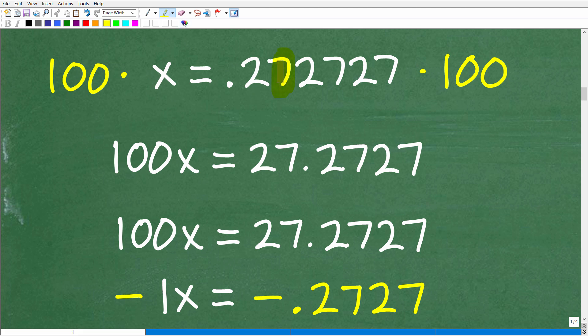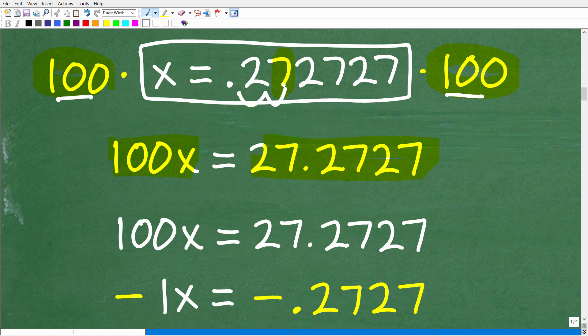And this repeating pattern ends at the hundredths place. So what that means is we're going to multiply both sides of this equation by 100. Now what ends up happening is we're going to get 100x here, and then 100 times 0.272727 is 27.2727. So simply our decimal point moves over two places to the right.